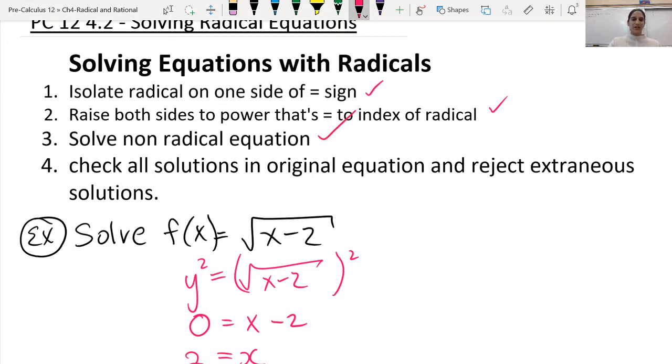Solve the non-radical equation, so we've done that, and then check all solutions in the original equation, and reject any extraneous solutions. So that's basically any that don't work out when we plug it back in.